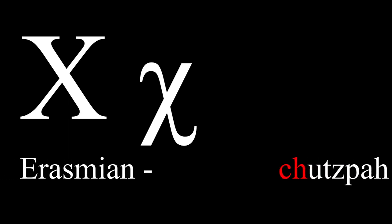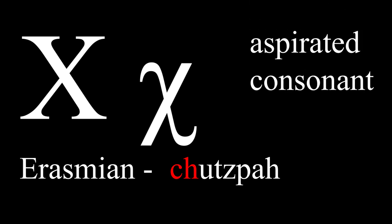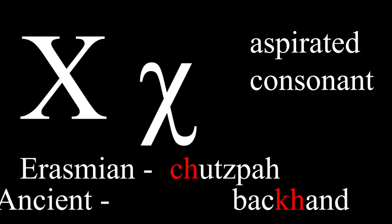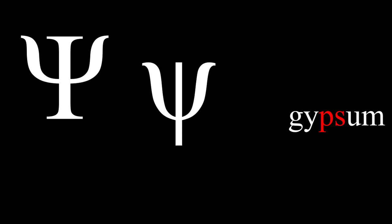This is chi. In Erasmian pronunciation, it sounds like the 'ch' in 'chutzpah.' In ancient pronunciation, chi sounds like a k with an h after it, similar to theta and phi — the technical term for this is an aspirated consonant. In ancient pronunciation, chi sounds like the 'kh' in 'backhand.' Psi is pronounced like a 'ps,' an example being the 'ps' in 'gypsum.'